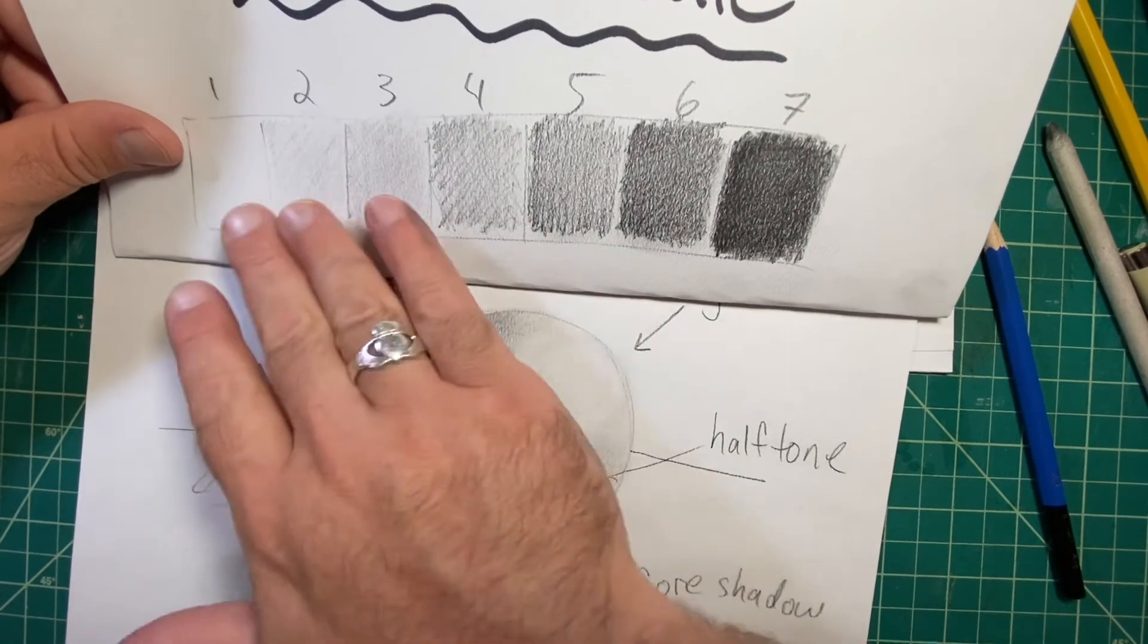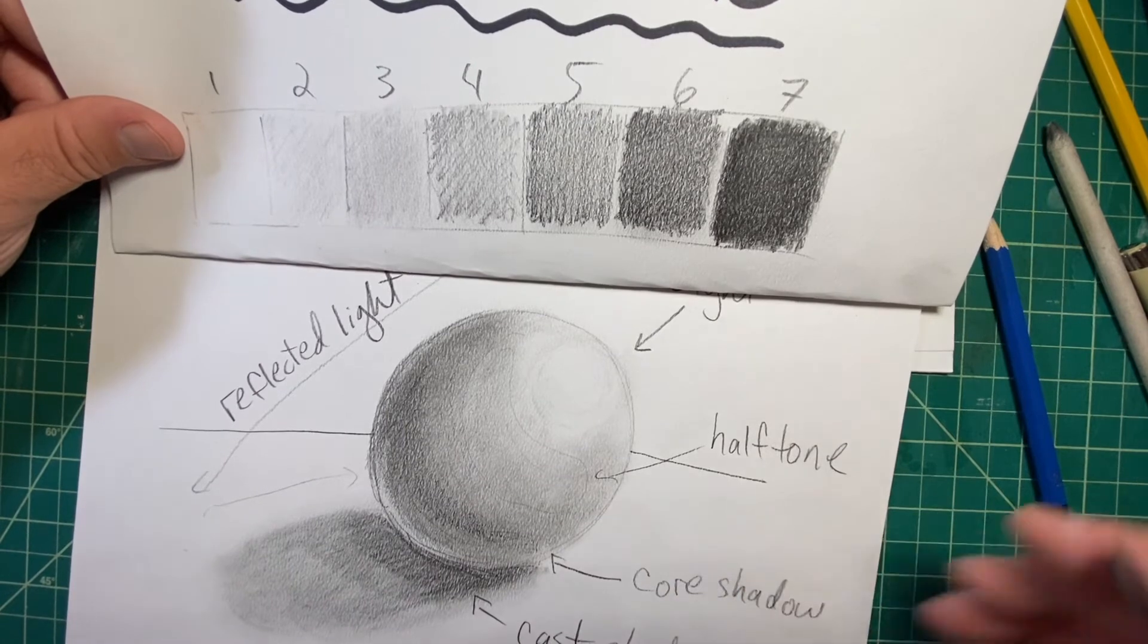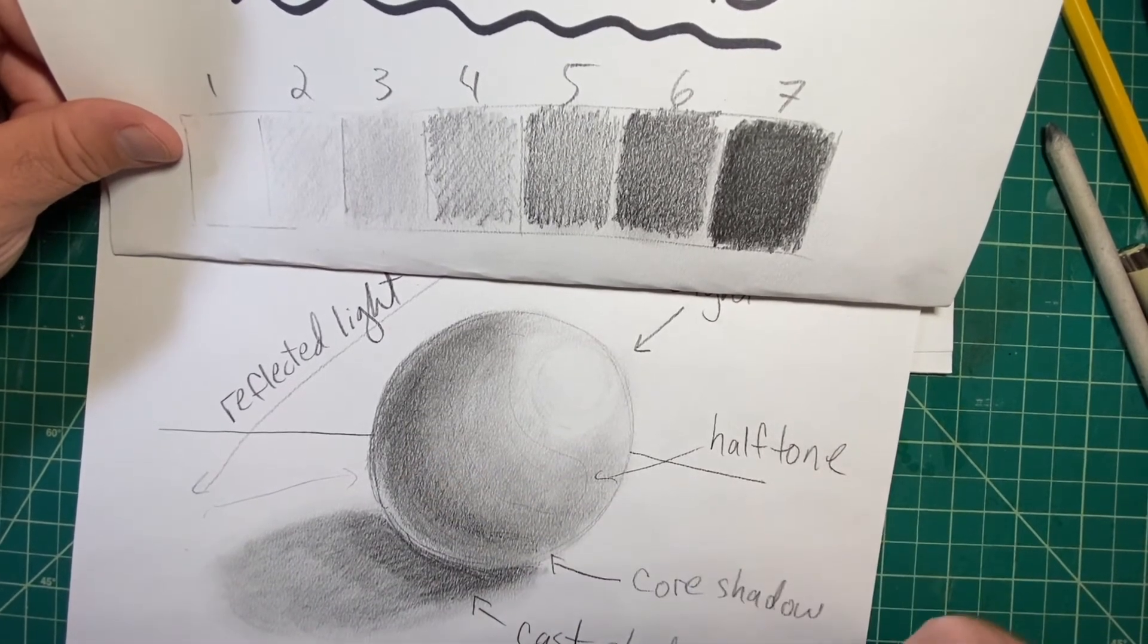So basically, using this value scale, I am able to determine what might need to be darker or lighter compared to that. In fact, looking at this drawing one more time, the darkest area should be the cast shadow where it meets the object.